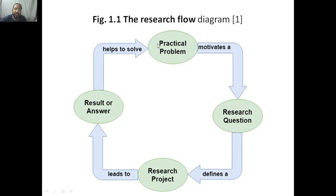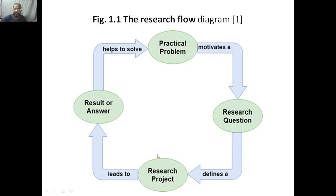This is the research flow: you start with a practical problem that motivates you to form a research question. The research question defines a research project. Through review of literature, you identify the specific problem that has not been touched. You work on it, keep repeating until you get good results, and those results provide an answer or solution to the research question, which in turn helps solve the practical problem. Everything is interrelated — this is called a research flow diagram.